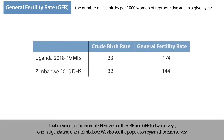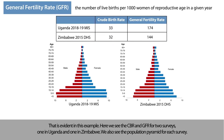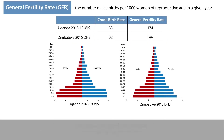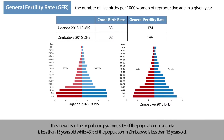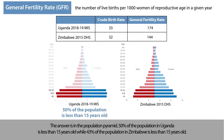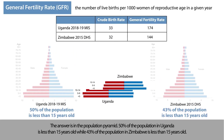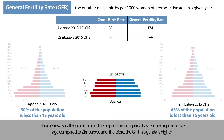That is evident in this example. Here we see the CBR and GFR for two surveys, one in Uganda and one in Zimbabwe. We also see the population pyramid for each survey. Why do you think Uganda and Zimbabwe have similar CBR but different GFRs? The answer is in the population pyramid: 50% of the population in Uganda is less than 15 years old, while 43% of the population in Zimbabwe is less than 15 years old. This means a smaller proportion of the population in Uganda has reached reproductive age compared to Zimbabwe, and therefore the GFR in Uganda is higher.